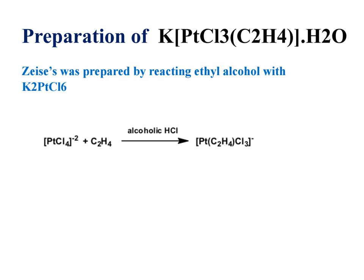This can also be prepared by another method by taking K2PtCl4, reacting with ethylene molecule in alcoholic HCl or alcohol SnCl4 gives Zeise's salt. These are some of the methods for preparation of Zeise's salt.